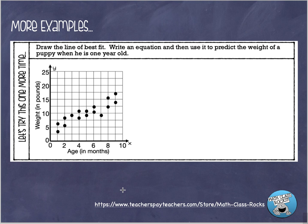Now let's look at a problem where we have to draw the line of best fit ourselves, then write an equation and use it to predict the weight of a puppy when he's one year old. We've got the age of the puppy in months on the x-axis and the weight in pounds on the y-axis. Take your index card or ruler and try to draw a nice straight line of best fit right through the center of this data.